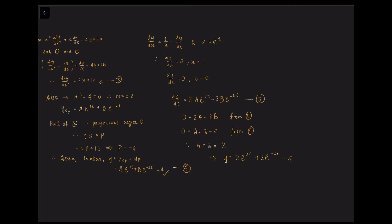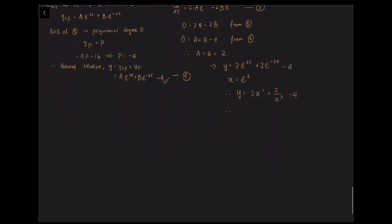Now we want to express y in terms of x. Substituting back x = eᵗ, we have y = 2x² + 2/x² - 4. Multiplying both sides by x², we obtain the final result: x²y = 2(x² - 1)².